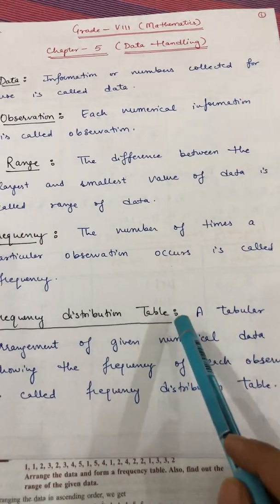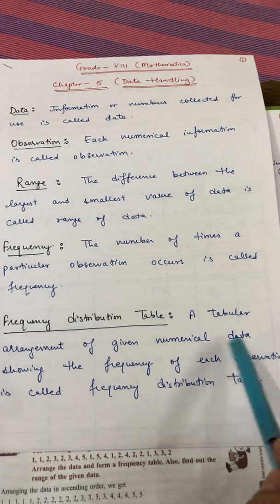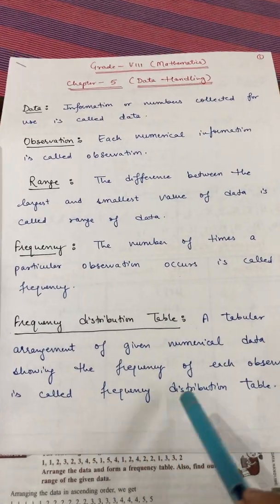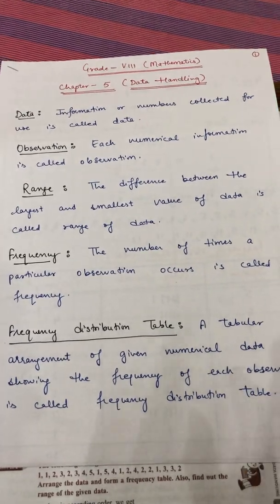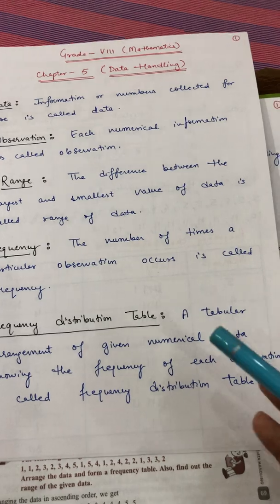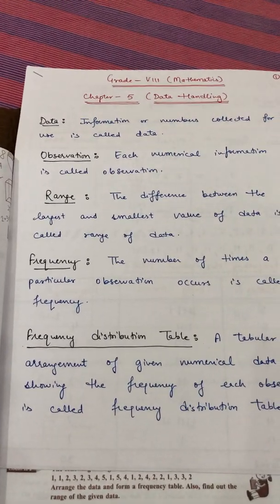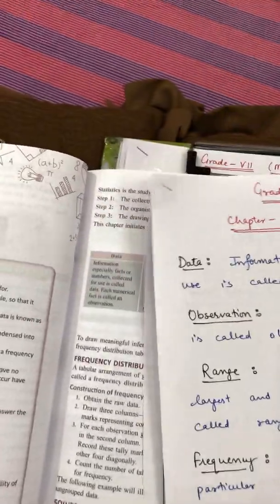Frequency distribution table: a tabular arrangement of given numerical data showing the frequency of each observation is known as a frequency distribution table. When we put all the numerical information into tabular form, that is known as a frequency distribution table.